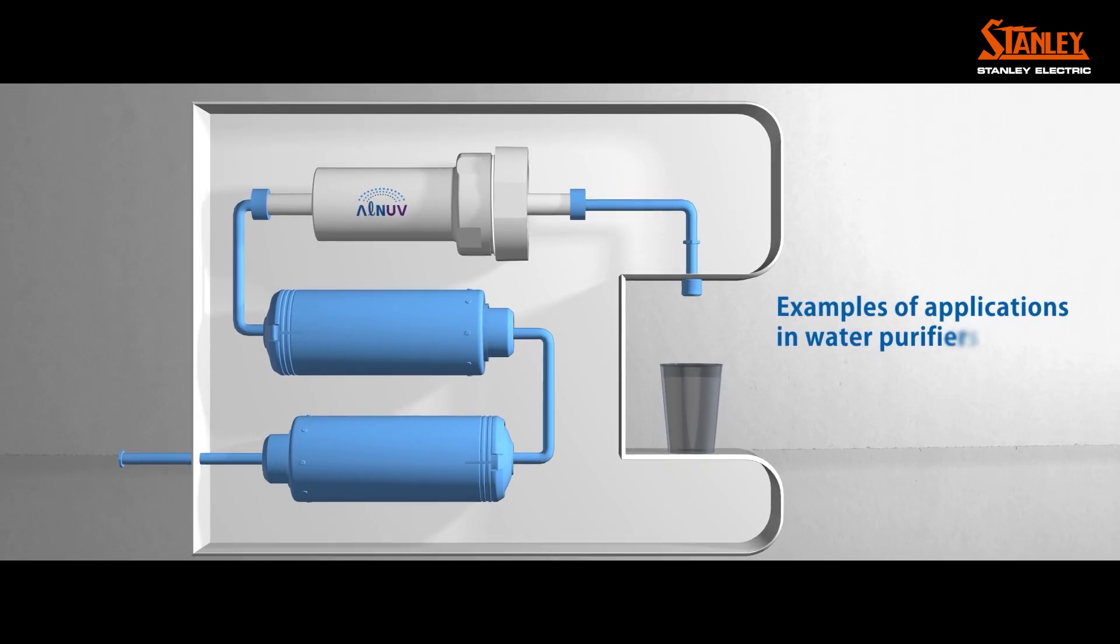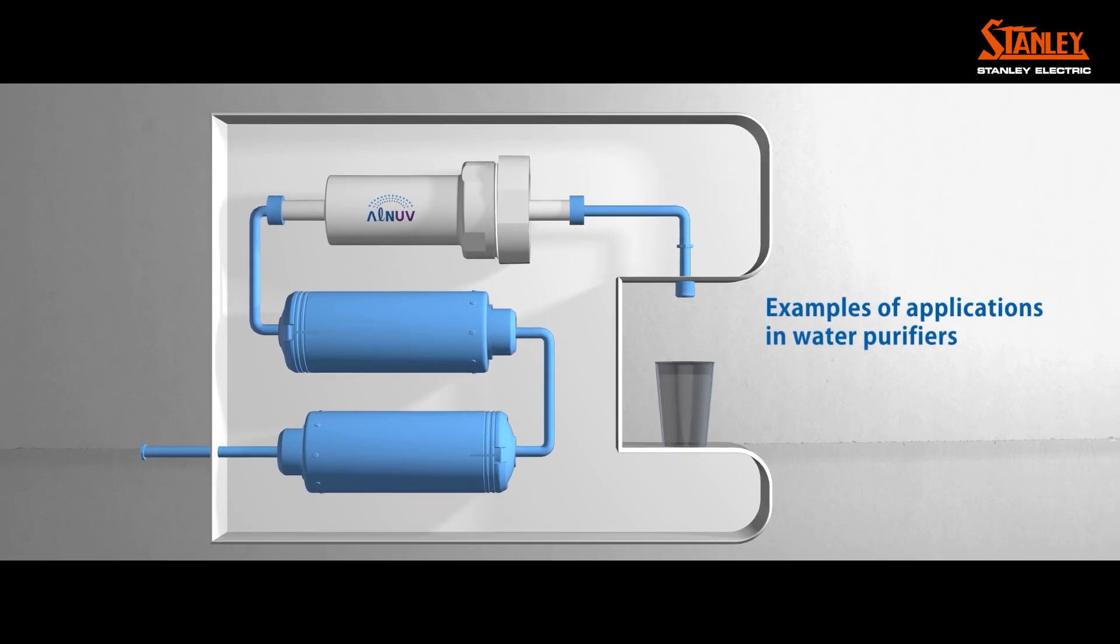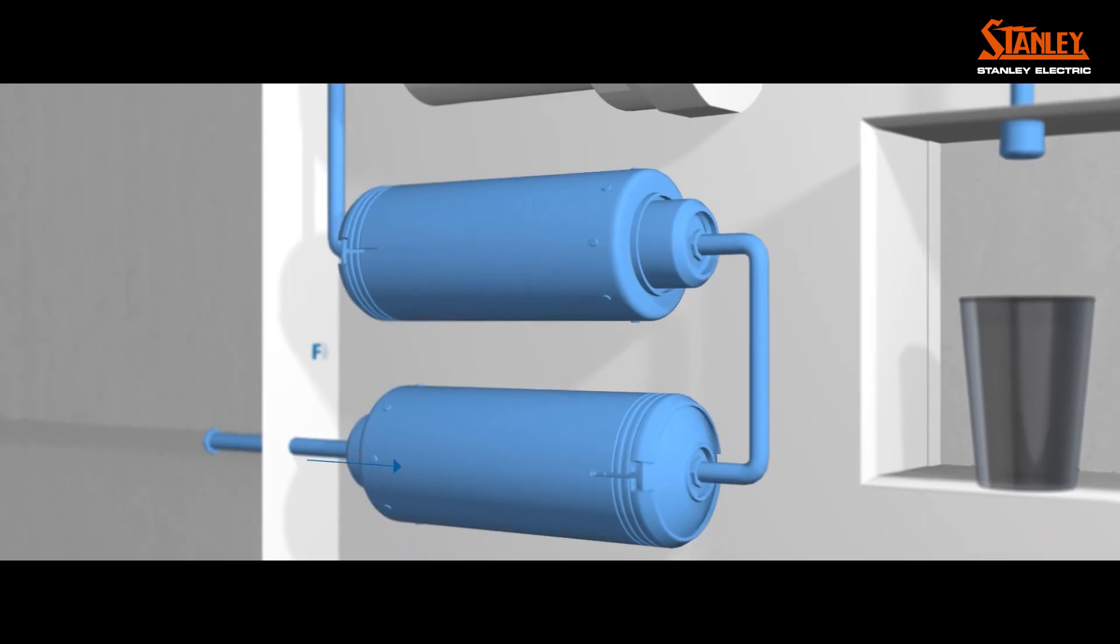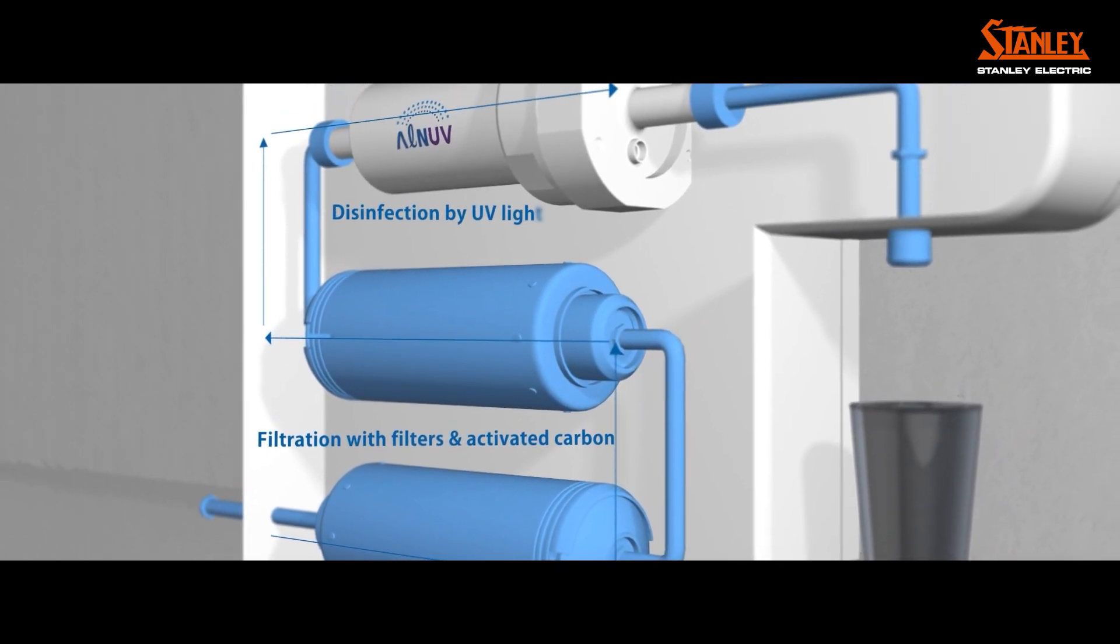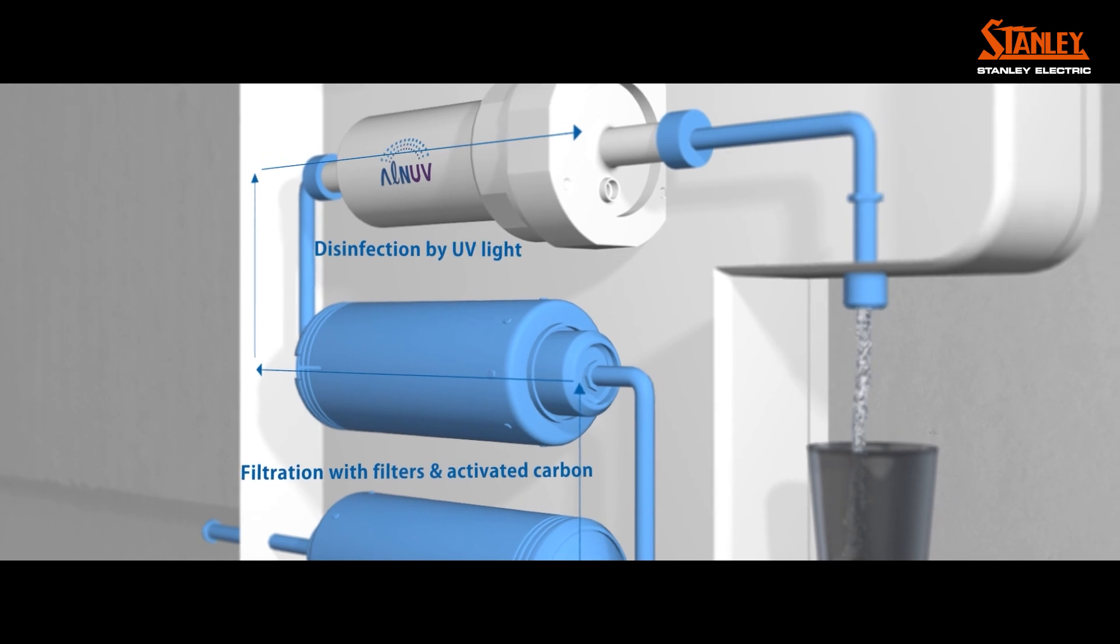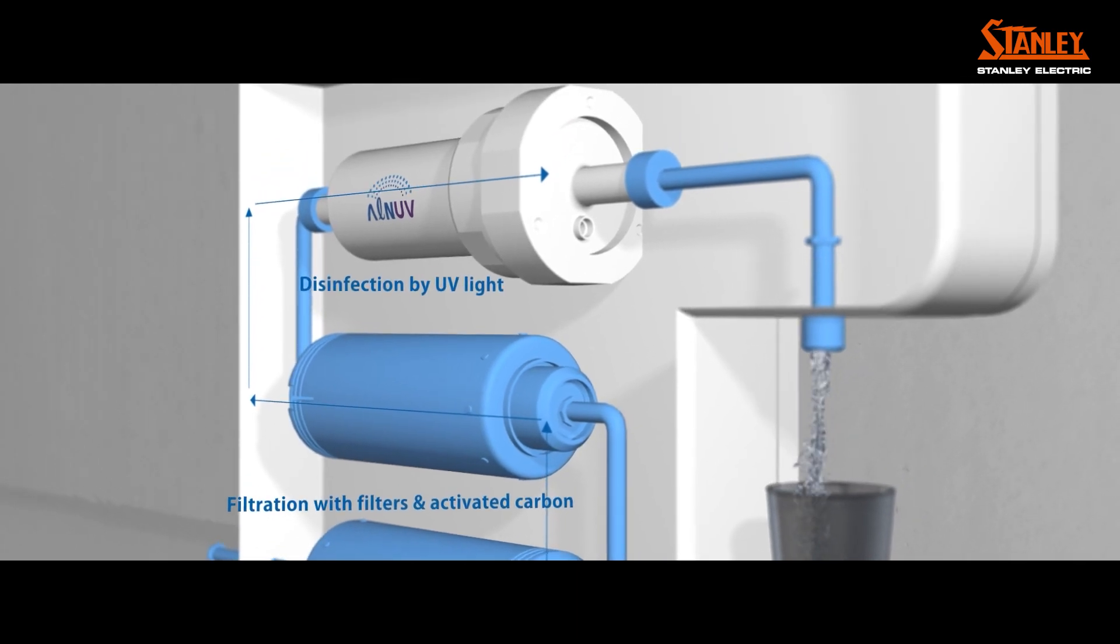This is an example of a water purification application of a small flow resin device. Once tap water has been filtered to remove impurities, it is irradiated with UVC light inside the water treatment device to eliminate viruses and bacteria.